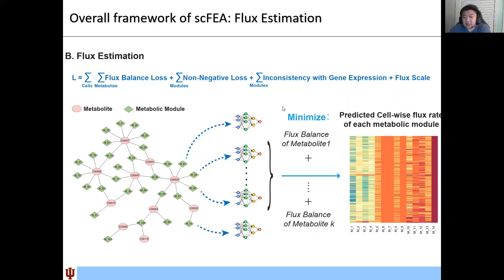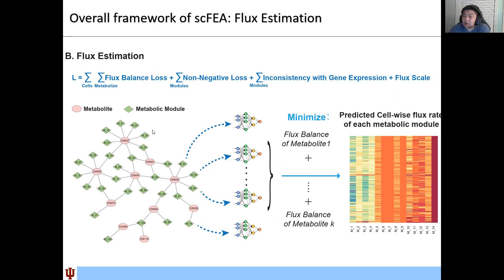After network reconstruction, for any single-cell RNA-Seq input data, the flux estimation is conducted by solving a self-constrained model. In detail, for each module, each cell's flux can be written as a neural network of the genes involved in that module. We hope the flux balance condition can be reached by minimizing the flux imbalance for each intermediate metabolite. There is also a non-negative loss, a loss of inconsistency between gene expression and predicted flux, and a scale term.